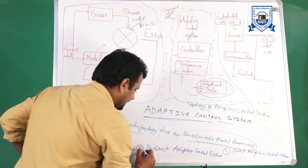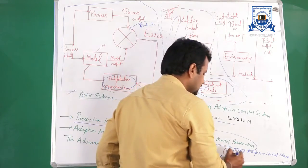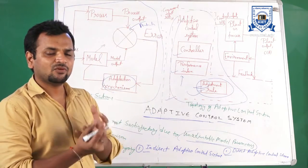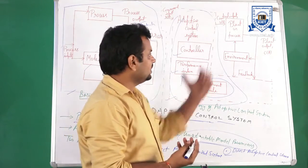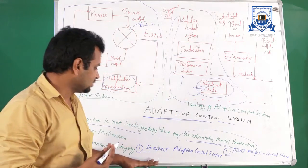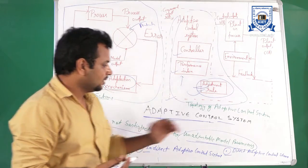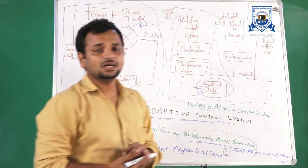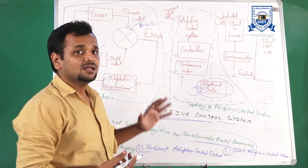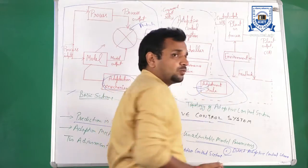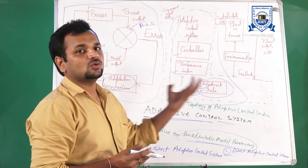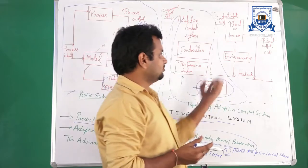The first is the direct adaptive control scheme and the second is the indirect adaptive control scheme. In the indirect adaptive control scheme, we use estimators to provide an indirect interaction between the process output and the adjustment rule. In the direct adaptive control scheme, we do not use an estimator. The estimator provides interaction between the adjustment rule and the process output in the indirect adaptive scheme.